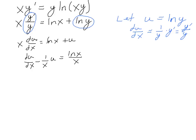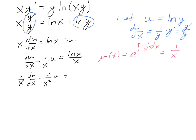In this case we have an integrating factor, which is e to the integral of negative 1 over x dx, which simply turns into 1 over x. Multiplying each piece through by the integrating factor, I get 1 over x times du/dx minus 1 over x squared times u.